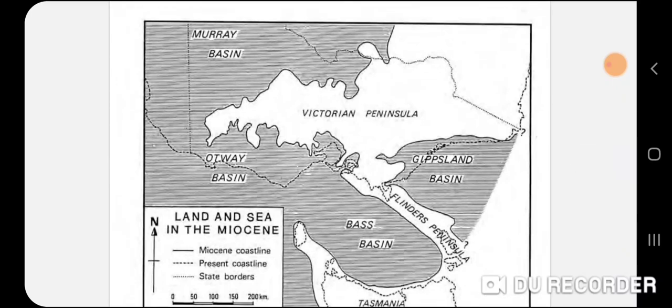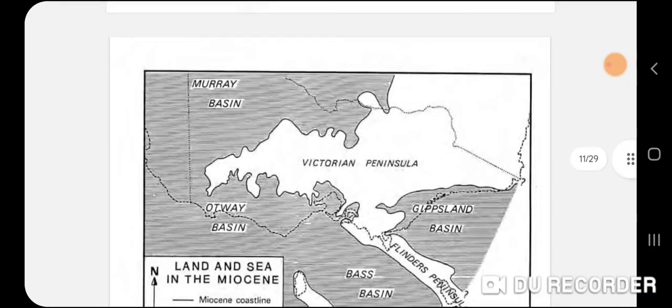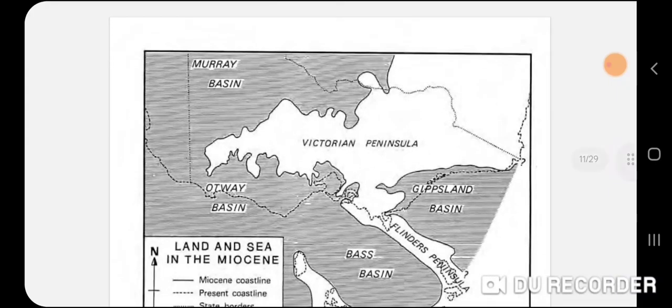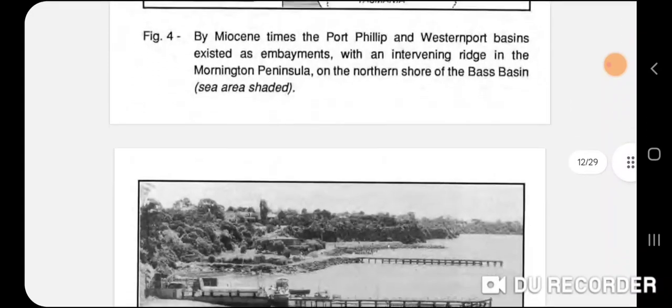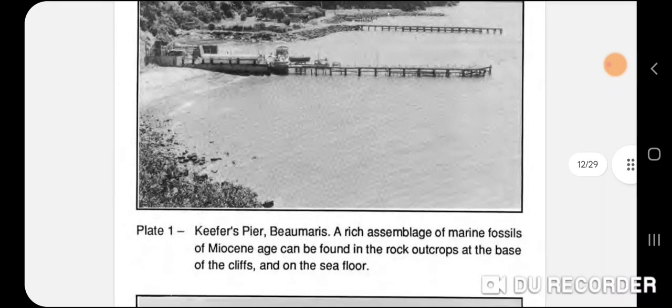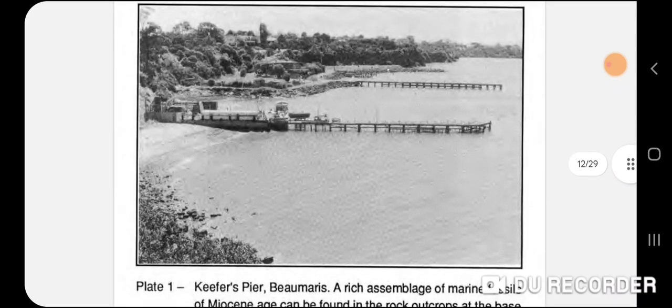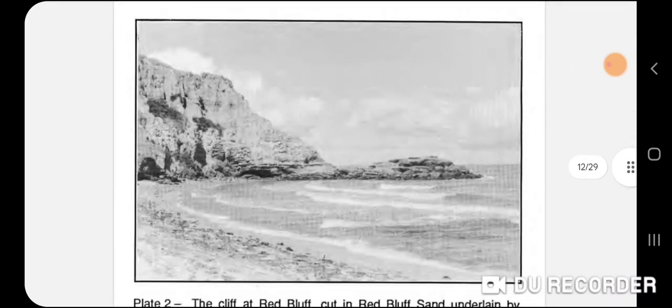Here's the land in Miocene times — before the Red Bluff was actually deposited. As you can see, a lot of Victoria was actually underwater, especially up near Mildura and the Otway Basin. Where the Otways are now is higher in elevation, so it's been uplifted quite a lot.